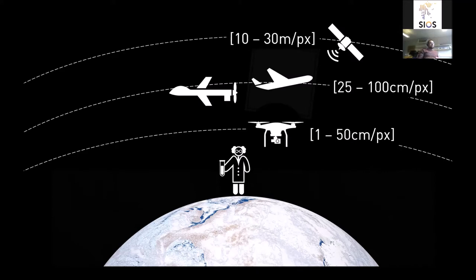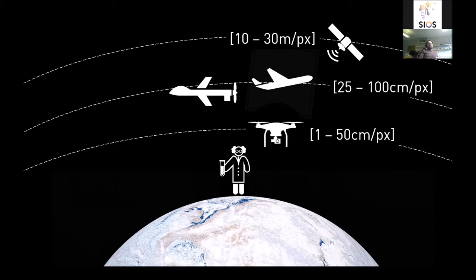Commercially available satellites now have a resolution of maybe 10 to 30 meters, while aircraft-based observations are more than an order of magnitude finer. Drone-based applications we're talking about today can have resolutions of one centimeter per pixel — no problem at all. Drone-based remote sensing offers the possibility to elevate your research, get more out of your field campaigns, and also helps close the gap for satellite remote sensing by enabling ground truthing on a larger scale.